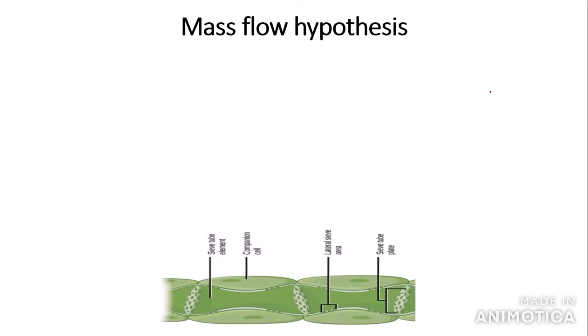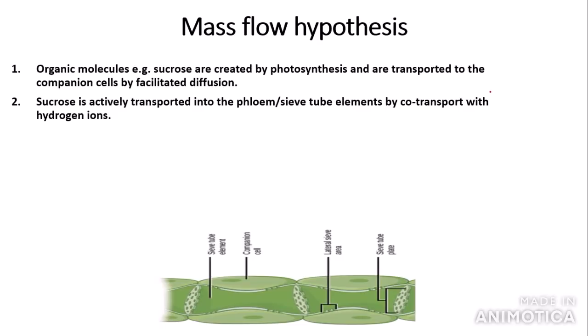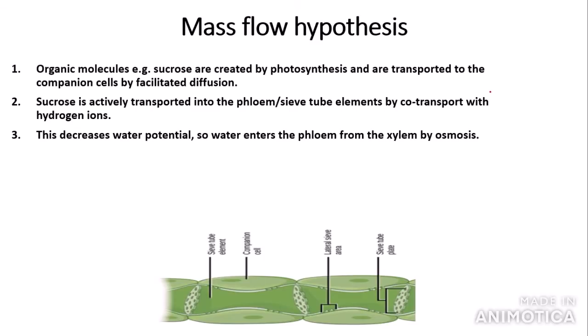So let's get onto the mass flow hypothesis. The first step: organic molecules, for example sucrose or glucose, are created by the process of photosynthesis. They are then transported into the companion cells by facilitated diffusion — that is, through carrier or channel proteins. Next, sucrose is actively transported into the phloem or sieve tube elements by co-transport with hydrogen ions. The transport of sucrose into the sieve tube elements decreases the water potential as the solute concentration increases. This means that water enters the phloem from the xylem by osmosis, as the xylem has a high water potential at this time.